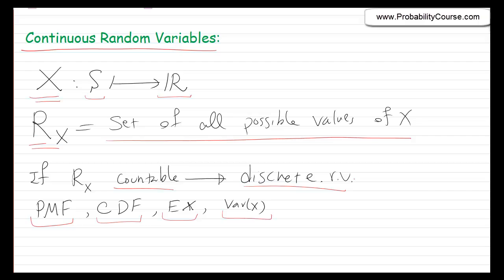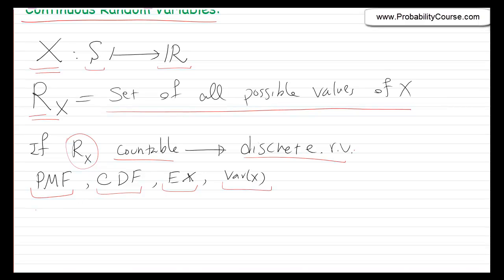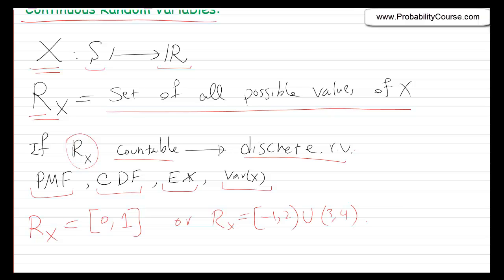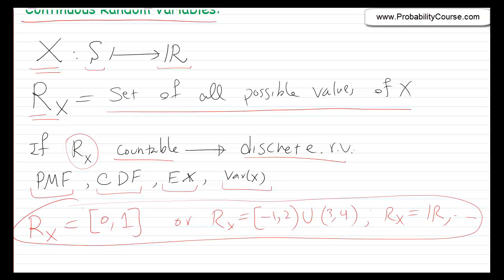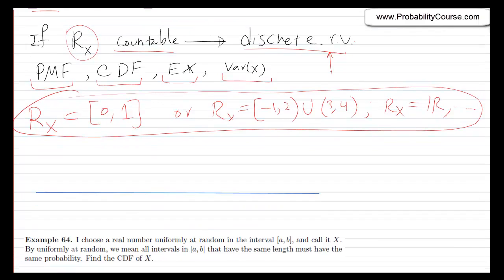Now, in this video, we want to talk about situations in which the range is an uncountable set — specifically, continuous random variables. The range of x could be the real numbers from 0 to 1, or from −1 to 2 union 3 to 4, or the entire real line. All of these sets are uncountable, so we cannot use our theory of discrete random variables here.